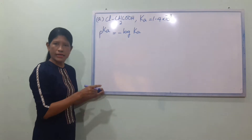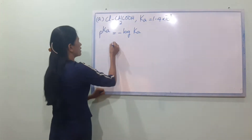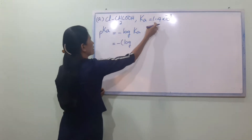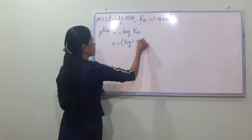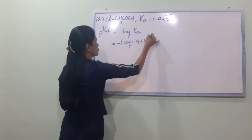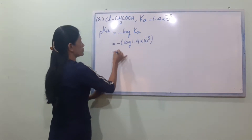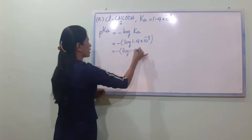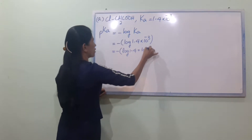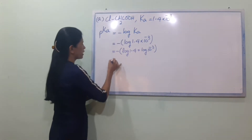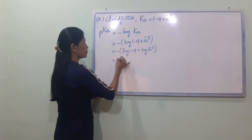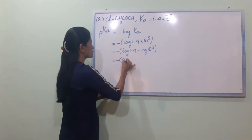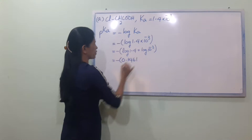So it's equal to minus Ka. Here we can see 1.4 into 10 power minus 3 is equal to 12. It is equal to minus the bottom under the bottom. So it gives us 1.4 plus 10 power minus 3. We will see minus the bottom under the bottom. So we have 0.146 here.